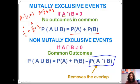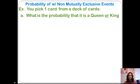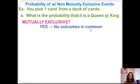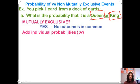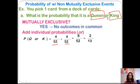For non-mutually exclusive events, consider picking one card from a deck: what is the probability it is a queen or a king? We determine whether this is mutually exclusive — a card being a queen has no effect on whether it's a king, so this is mutually exclusive. The probability of a queen is 4 out of 52, and the probability of a king is 4 out of 52. Combined, the probability of getting either is 8 out of 52, which equals 2 out of 13.